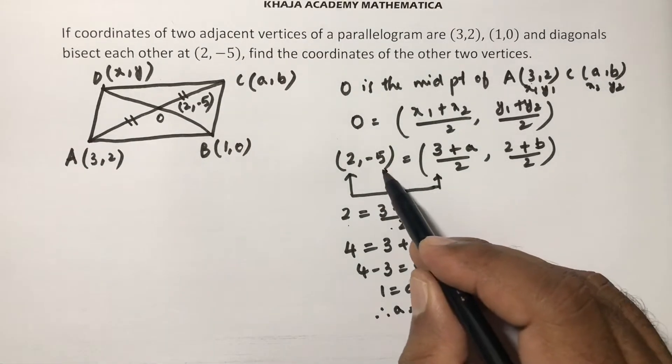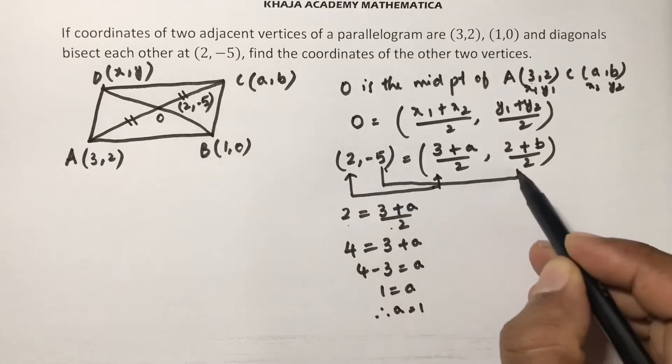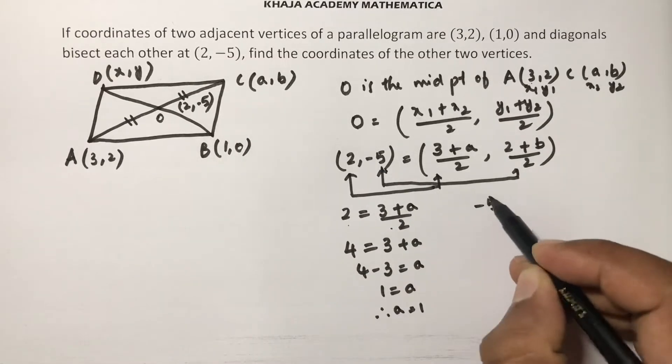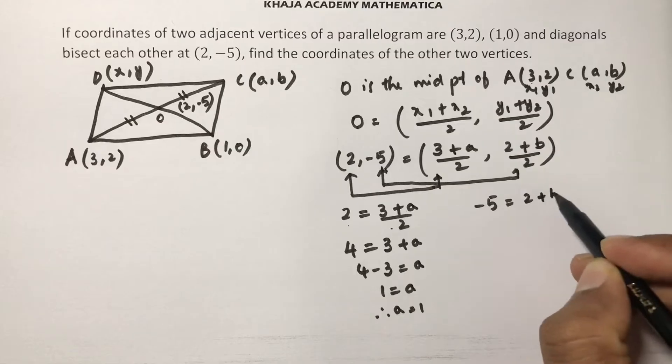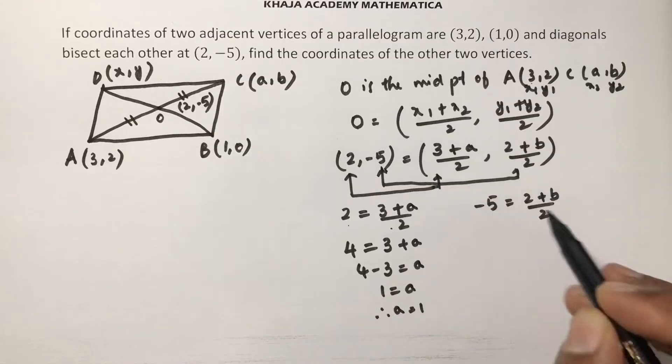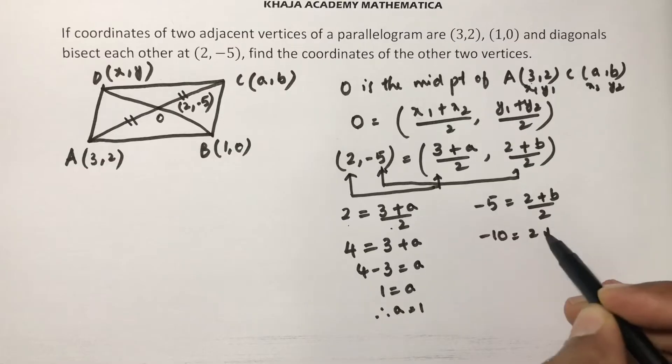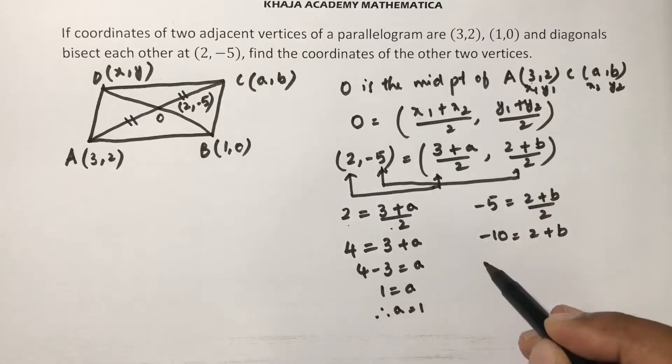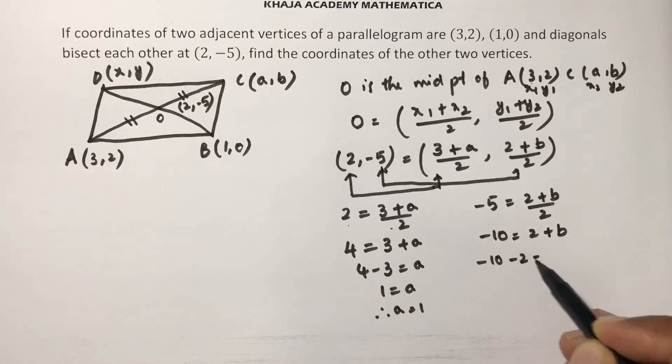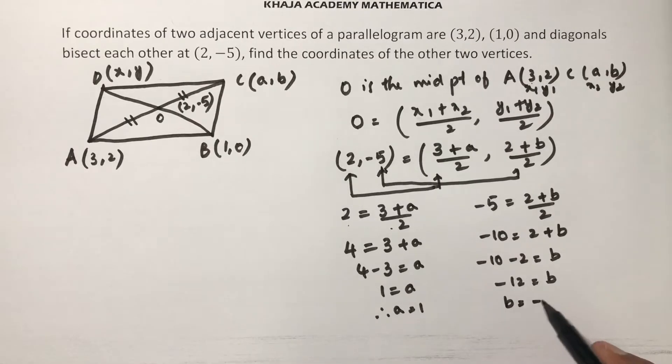Here you will equate ordinate with ordinate. So -5 equals (2+b)/2. 2 times -5, -10 equals 2+b, -10 minus 2 equals b, -12 equals b. So b equals -12. So you got the vertex C, C is (a,b). So the answer is for C, a is 1, b is -12.